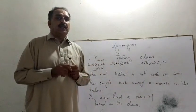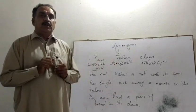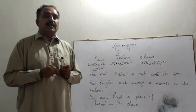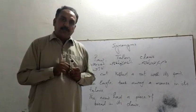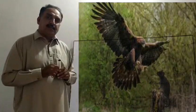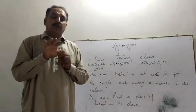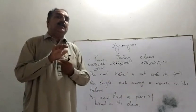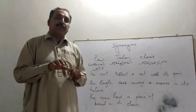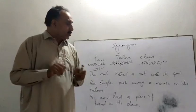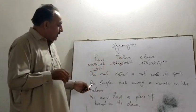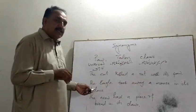Talon کیا ہے؟ Talon شکاری پرندے جیسے eagle، باز، عقاب — وہ شکاری پرندے جو چھوٹے پرندوں یا چھوٹے جانوروں کو اپنے پنجوں میں اٹھا کر لے جا سکے، ان کے پنجوں کو ہم talon بولتے ہیں۔ ان میں ہتیلی کم ہوتی ہے اور پنجہ زیادہ ہوتا ہے، انگلی ٹِپ زیادہ ہوتے ہیں۔ For example: The eagle took away a mouse in its talons.